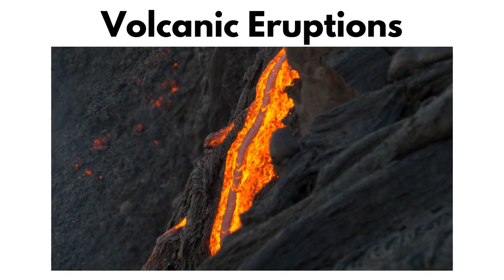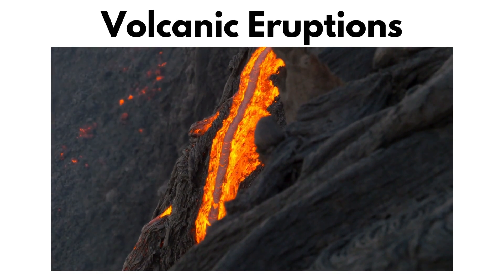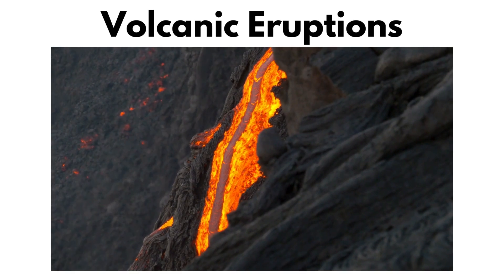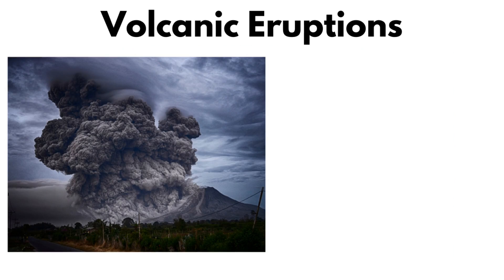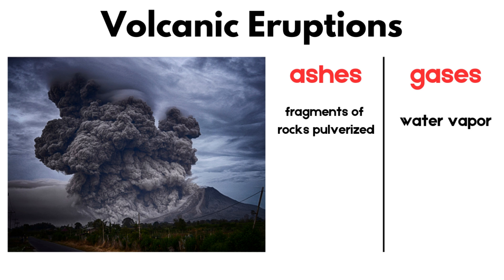Lava is the magma that has reached the surface. Depending on its viscosity and temperature, it can flow quickly as fluid lava or more slowly as viscous lava. Large amounts of volcanic ash and gases are ejected into the atmosphere. Ash consists of fragments of rocks pulverized by the volcano, while gases include water vapor, carbon dioxide, sulfur dioxide, and other components.